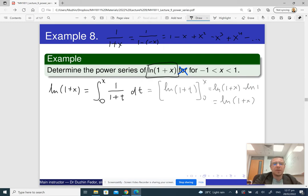So this is going to be the integral from 0 to x. Now I'm going to apply my power series to the integrand. And the integrand is 1 over (1+t). So I've got to replace x with t: 1 minus t plus t squared minus t cubed plus t to the 4 minus and so on dt.